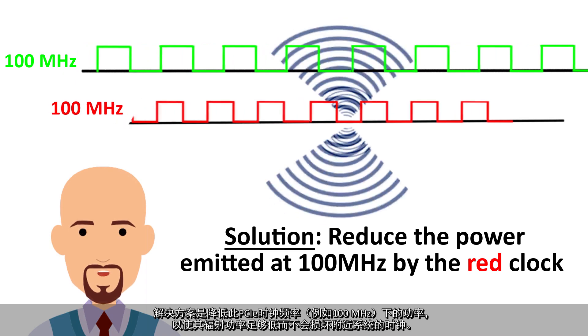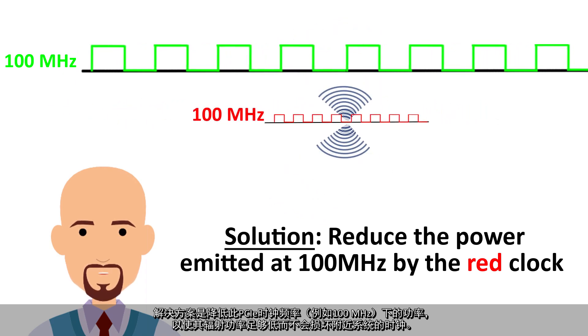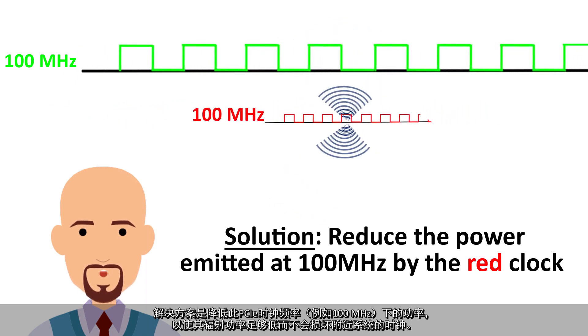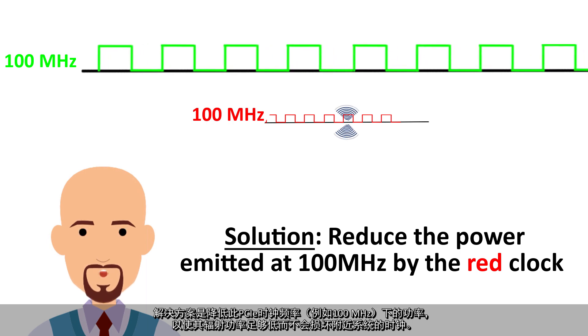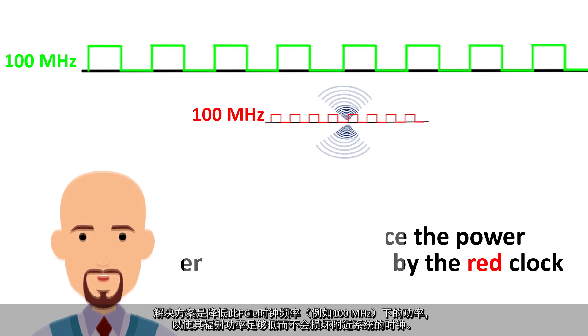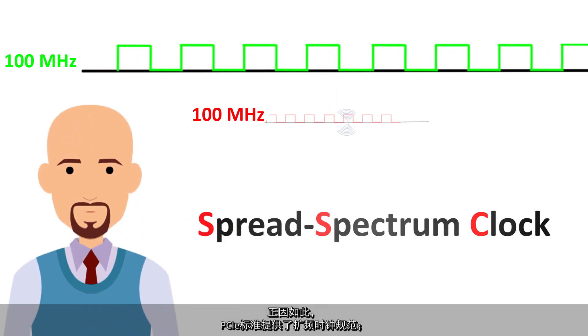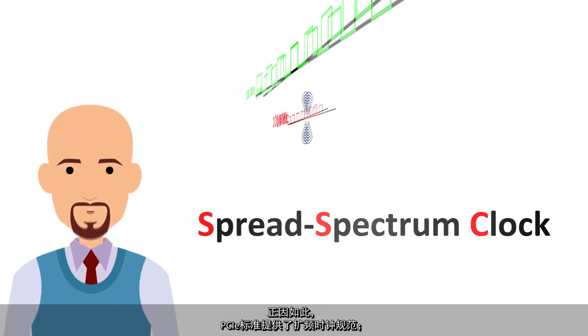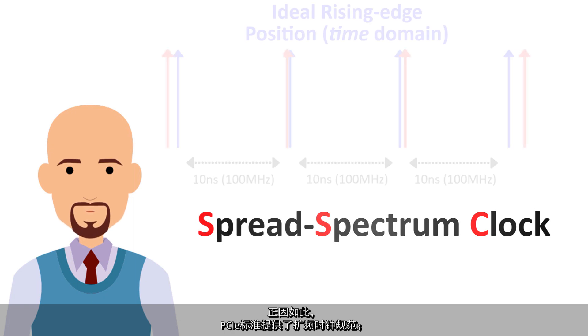The solution is to reduce the power at that PCIe clock frequency of, for example, 100 MHz, so that its radiated power is low enough not to corrupt the clocks in nearby systems. This principle is the reason that the PCIe standards provide spread spectrum clock specifications.